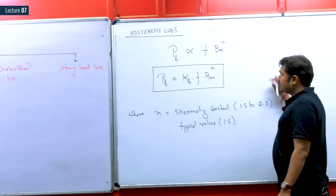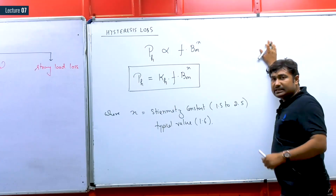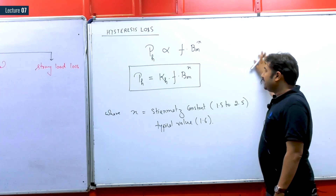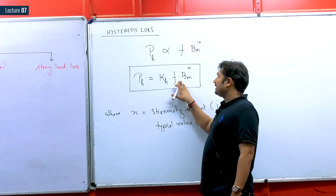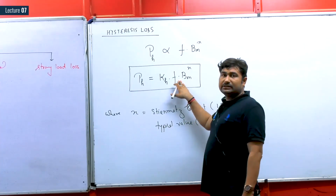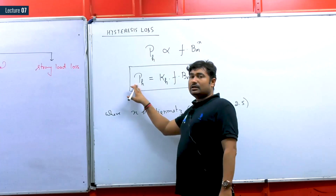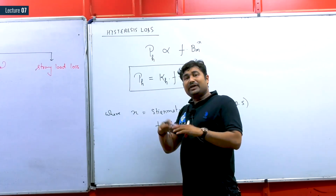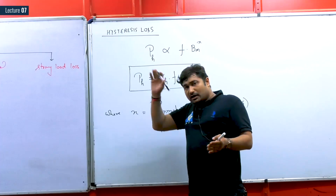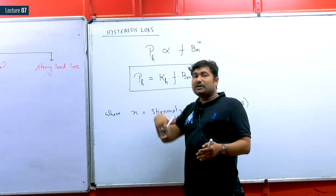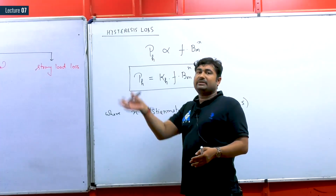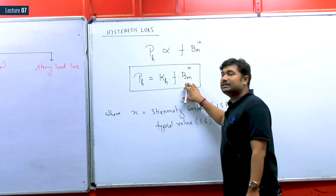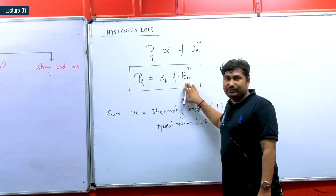Please observe: the area under the BH curve is defined as hysteresis loss. If we increase the frequency while keeping all other things the same, hysteresis loss is going to increase. Why? As the frequency increases, the number of times the BH curve is traversed increases. This means the area under the BH curve accumulates again and again, and therefore the loss increases.